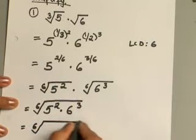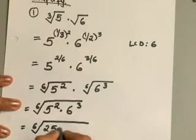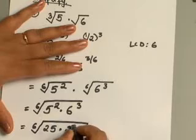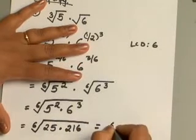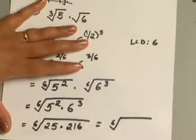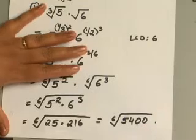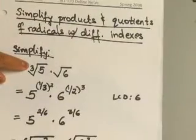And go ahead and evaluate what these numbers will be. So that will be 25, 5 squared, and then 6 to the 3rd will give you 216, and multiply 25 into 216 and I believe your product should be 5,400. So you end up with 6th root of 5,400 as the product of this.